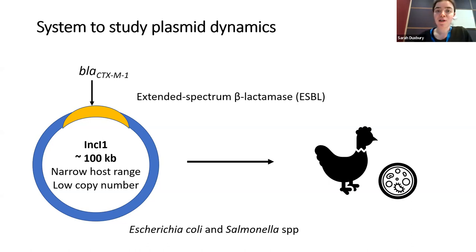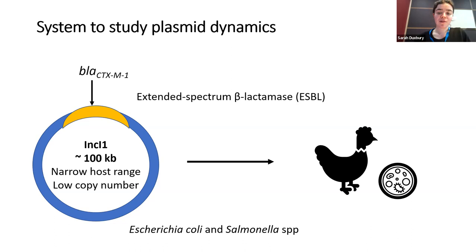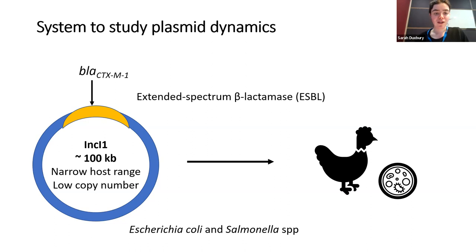A particular resistance gene carried on a large plasmid — the blaCTX-M1 resistance gene associated with an IncA/C1 plasmid — is especially common in chicken guts, particularly in broiler chickens used for meat production and across a range of livestock animals. A 10-year study showed a strong bias towards these ESBL resistance genes being carried on plasmids rather than on the chromosome. This plasmid is 100 kilobases, has a narrow host range existing in Enterobacteriaceae species, and a low copy number of typically one, possibly two copies per cell.